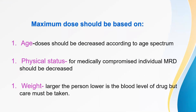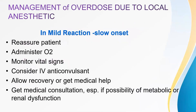Maximum dose should be based on age, physical status, and weight of the patient. Management of overdose: manage according to the type of reaction — mild reaction slow onset, severe reaction rapid onset, or severe reaction slow onset. For mild reaction slow onset, due to rapid absorption and too-large total volumes: reassure the patient, administer oxygen, monitor vital signs, consider IV anticonvulsants, allow recovery or get medical help, get medical consultation especially if possibility of metabolic or renal dysfunction.